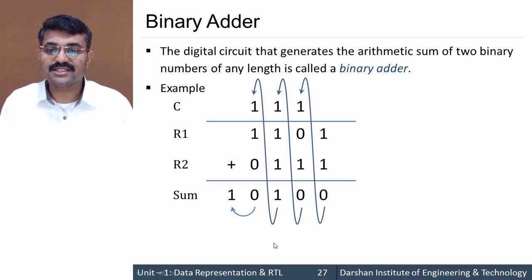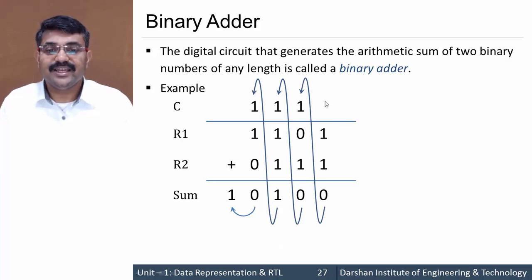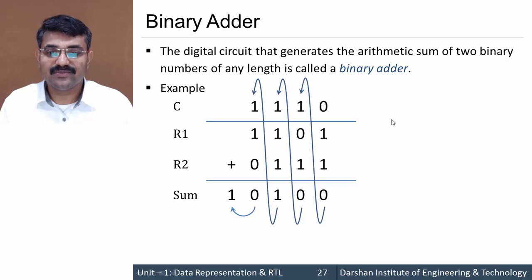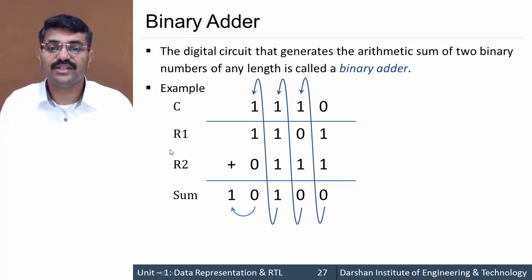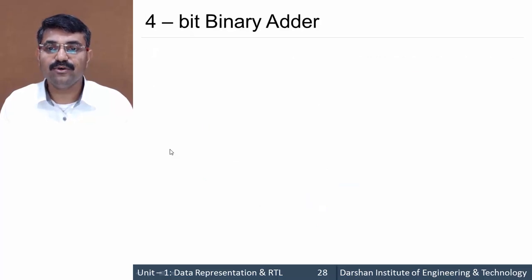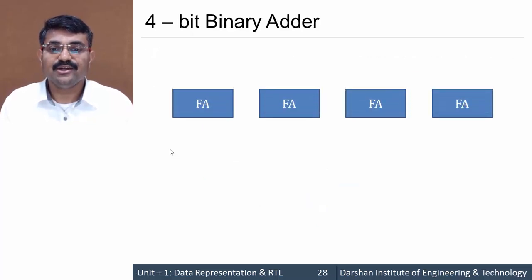This is how binary addition is performed. Note that the least significant bit position will always have 0 during its addition operation since the initial carry-in is 0. Now let's implement this 4-bit addition in a hardware circuit — a 4-bit binary adder — for which we require full adder circuits.